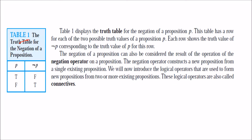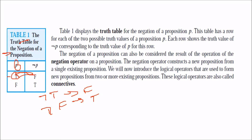So negation means: if p is true, not p is false; if p is false, not p is true. This is called the truth table — whenever you present all possible values of p in a column or row form, it is a table called the truth table because we are presenting truth values. Negation of true is false; negation of false is true. This is the unary operator called the negation operator.